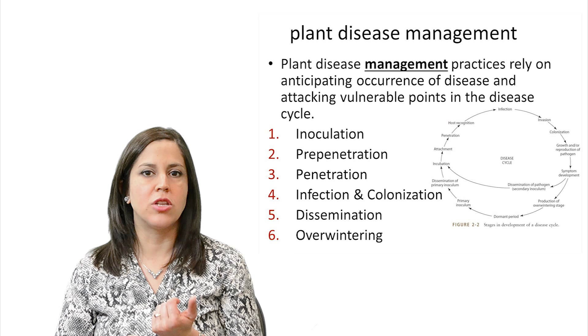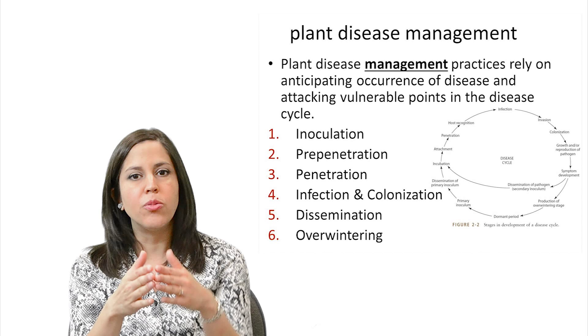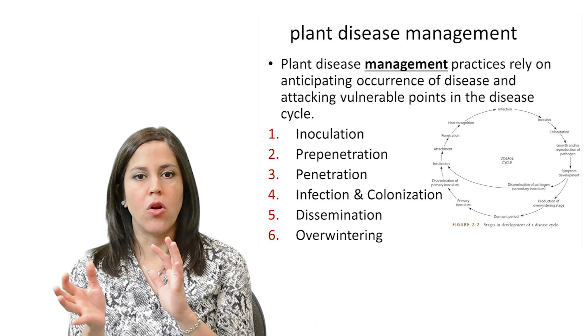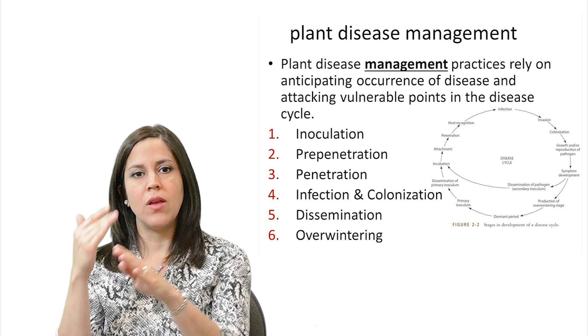For plant disease management, we rely on anticipating the occurrence of the disease. We want to attack the vulnerable part in the disease cycle. As we discussed before, the disease cycle includes inoculation, pre-penetration, penetration, infection, and colonization. What we want to do is create a break at some point in the disease cycle so our management strategy can work.